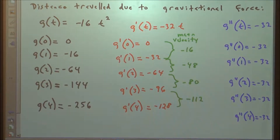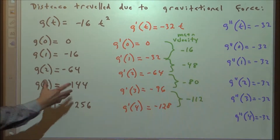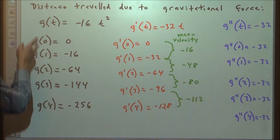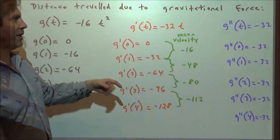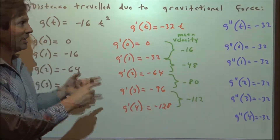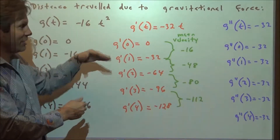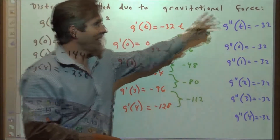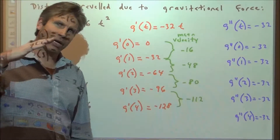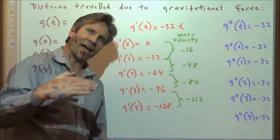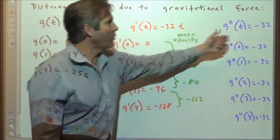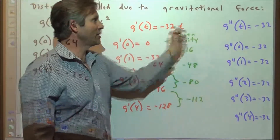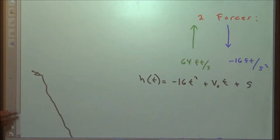To summarize: the original function is distance fallen; the first derivative is the rate of change — in this practical application, that is velocity. The second derivative represents concavity — we're actually going faster in the negative direction, getting bigger negatives. So this is how the rate of change is changing: it's the rate of change of the rate of change. Keep an eye out for that.